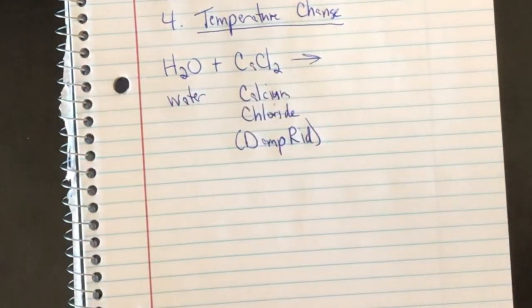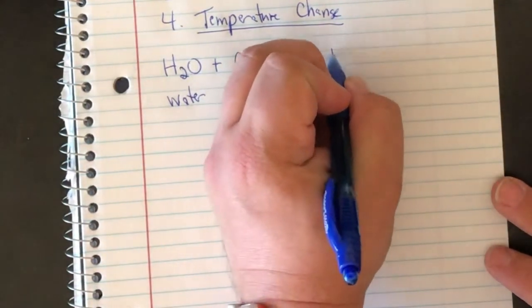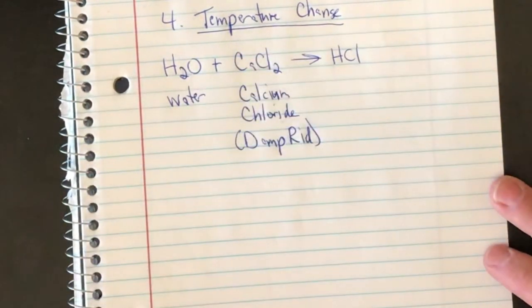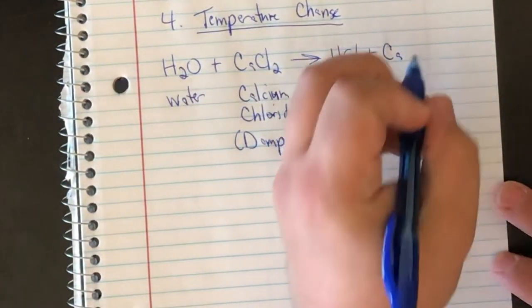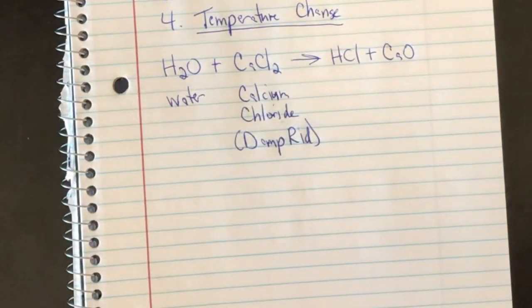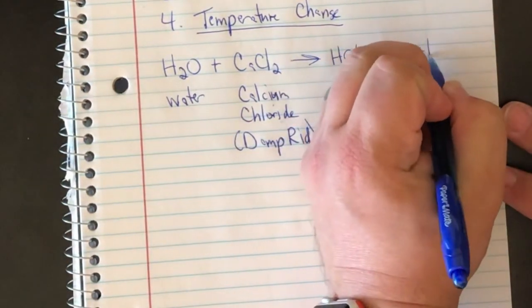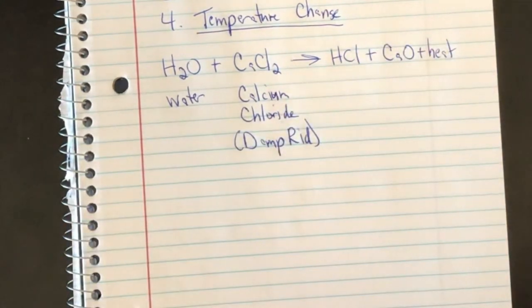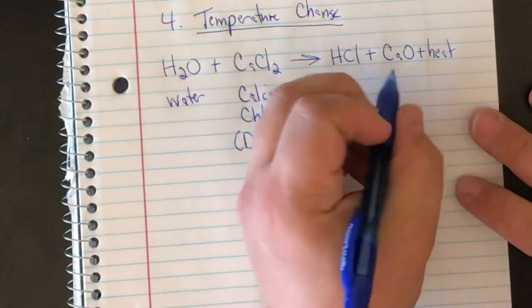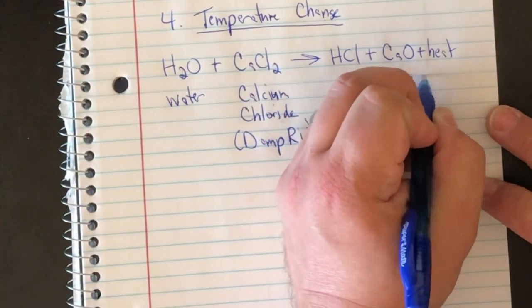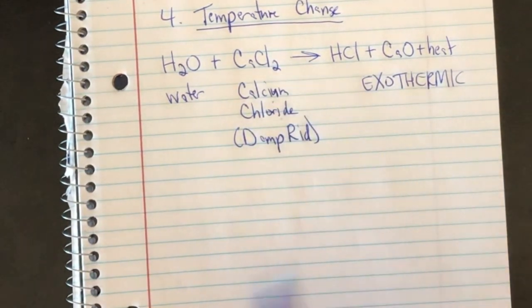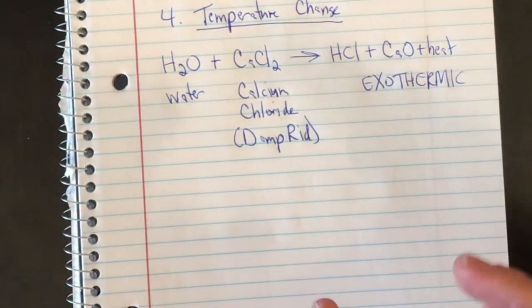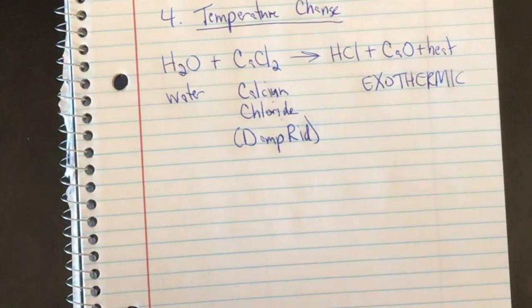When these guys react together, what they create is a little bit of hydrochloric acid plus some calcium oxide, and they release heat. So that makes this reaction an exothermic reaction. Exo means out, thermic means heat. That means that the heat that's stored in these chemicals gets released, causing the area around it to warm up.